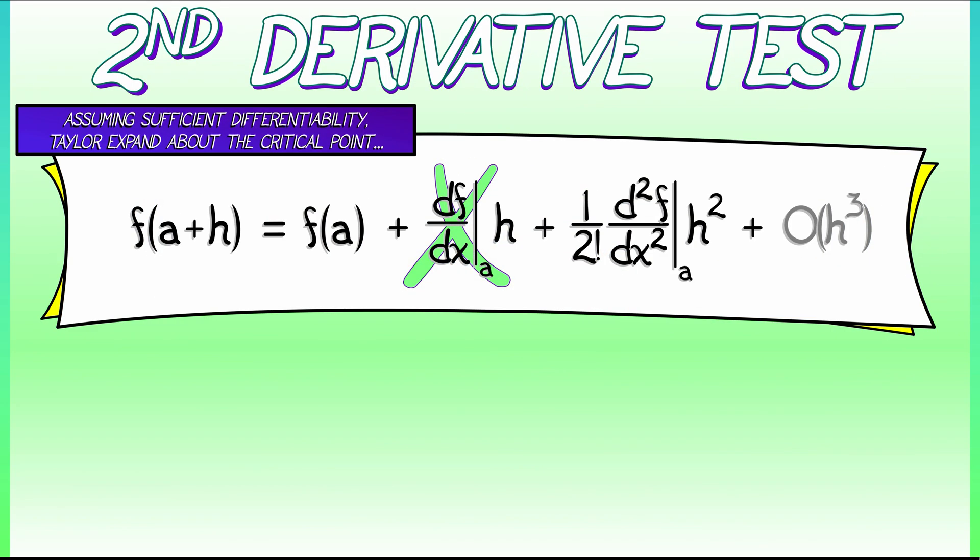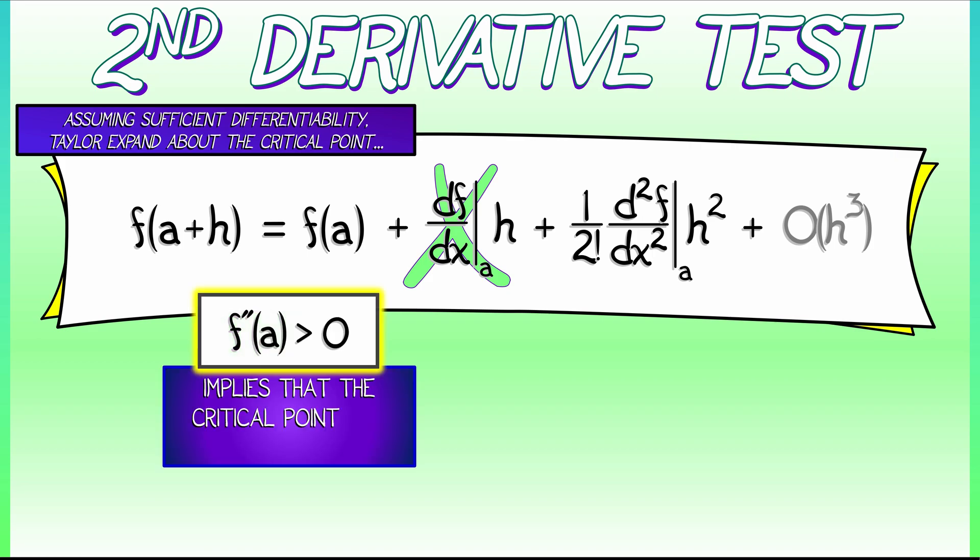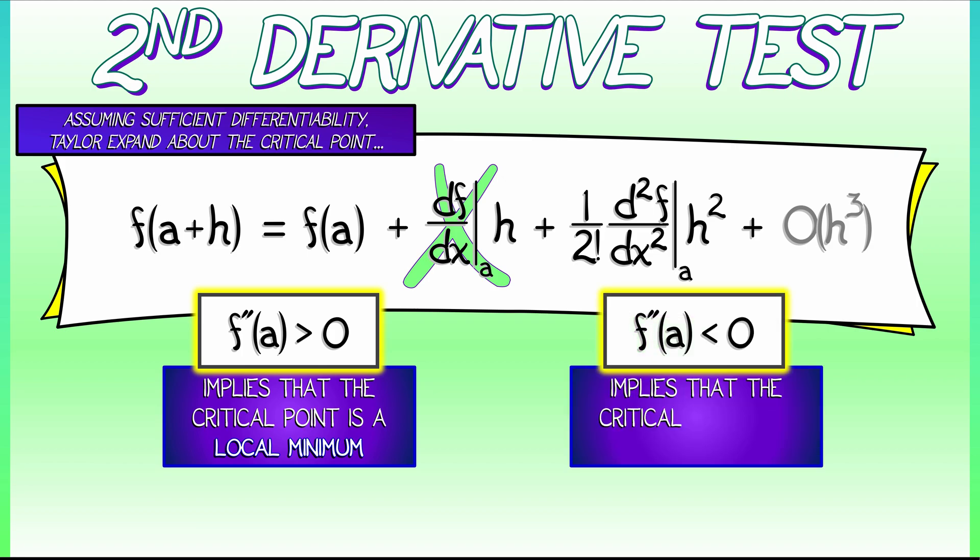Now, notice you have that 1 over 2 factorial in front, but we don't really care about that because it's a positive number. Positive second derivative, it opens up. If you're in that case, that means you have a local minimum. If that second derivative is negative, then the parabola opens downwards. That implies that the critical point is a local maximum.